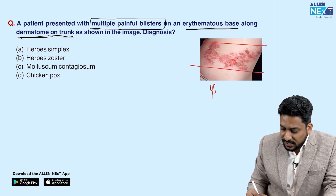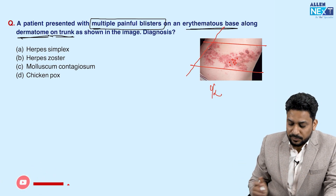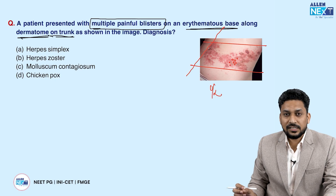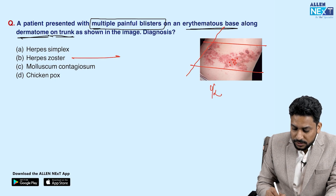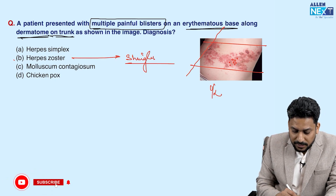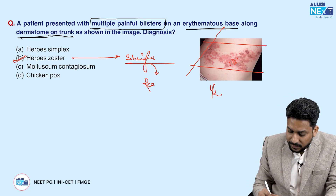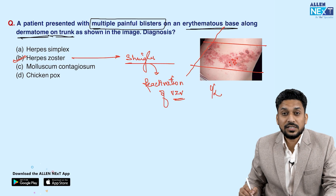They are only on one side, as you can see in the image — only on this side and not on the other side. So unilateral dermatomal multiple grouped painful vesicles or blisters are features of shingles, that is herpes zoster. Herpes zoster is caused by reactivation of varicella zoster virus, which causes chickenpox.